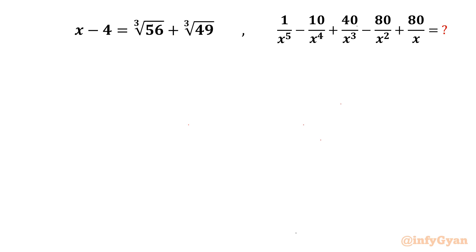Welcome to Infigyan, my dear friends. Today we are going to simplify one challenging algebraic expression: 1 over x power 5, minus 10 over x power 4, plus 40 over x cube, minus 80 over x square, plus 80 over x. The known equation is x minus 4 equal to cube root of 56 plus cube root of 49.